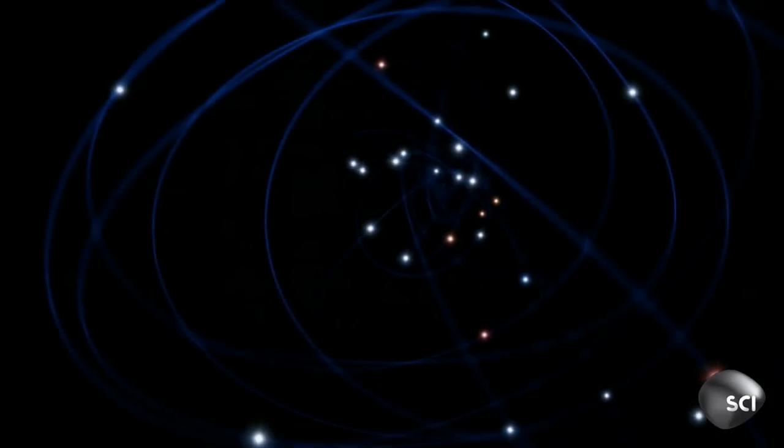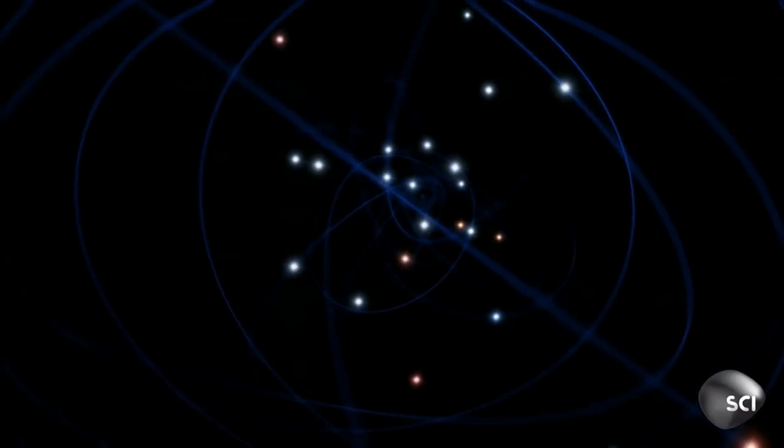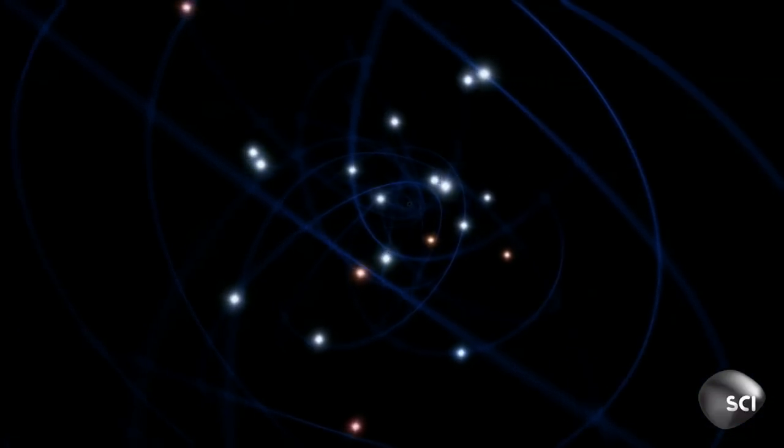And if you do the calculations, the amount of mass needed at the very center is about 4 million times the mass of our sun. So stars are basically orbiting like planets around this empty object with 4 million times the mass of the sun.